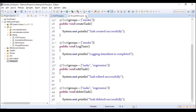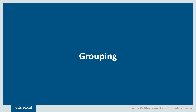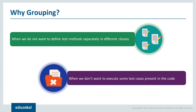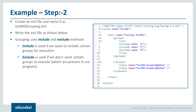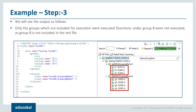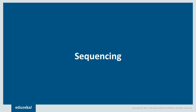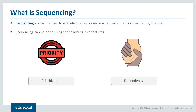The next topic is sequencing. We already saw one way of sequencing: priorities. The second way is dependency. What is dependency? If one test case depends on another test case, we create a dependency and make that method wait until the independent method executes properly. This is done using dependsOnMethods.